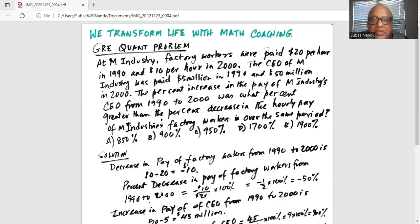The percent increase in the pay of M Industry's CEO from 1990 to 2000 was what percent greater than the percent decrease in the hourly pay of M Industry's factory workers over the same period. And there are five options.